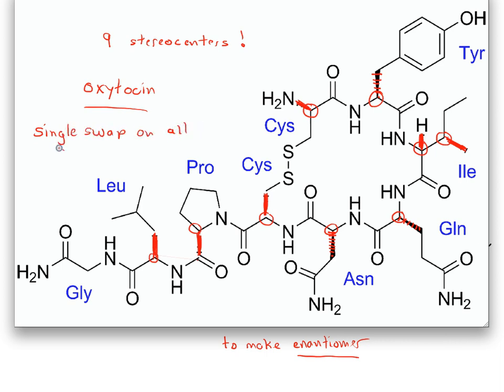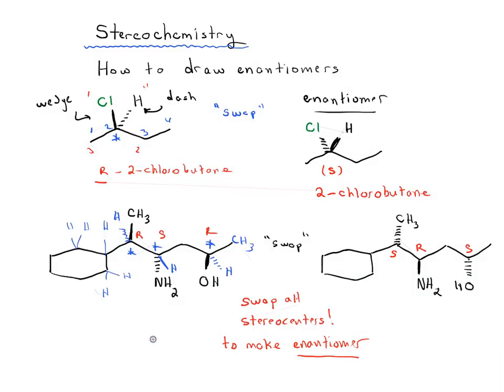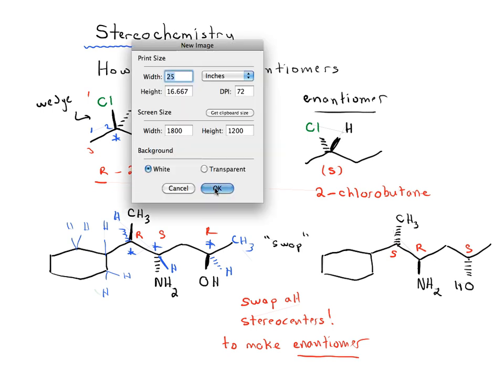Single swap on all stereocenters. Now if we only did eight out of nine, or seven out of nine, or even only switched one, it would be a stereoisomer but it would not be an enantiomer — it would be called a diastereomer. So watch out for that: if you've got multiple stereocenters and you only flip one, it's going to be a diastereomer.